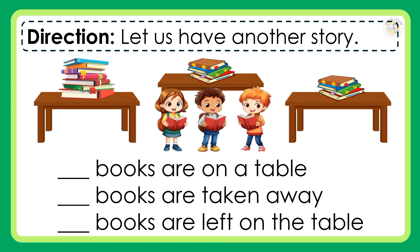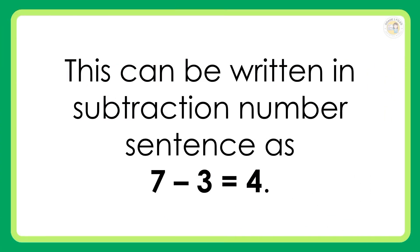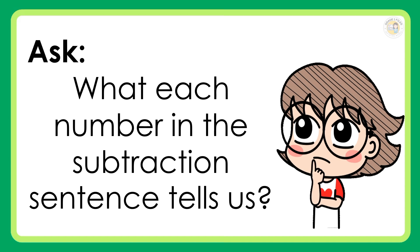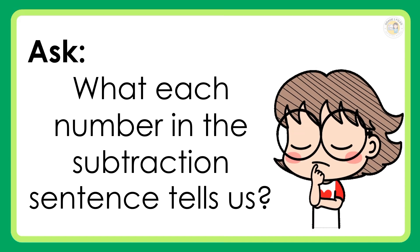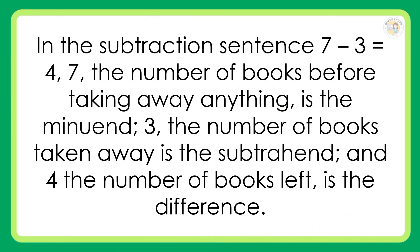Direction: Let us have another story. Books are on a table. Books are taken away. Books are left on the table. This can be written as the subtraction number sentence: 7 minus 3 is equal to 4. In the subtraction sentence 7 minus 3 is equal to 4: 7 is the number of books before taking away anything — the minuend. 3, the number of books taken away, is the subtrahend. And 4, the number of books left, is the difference.